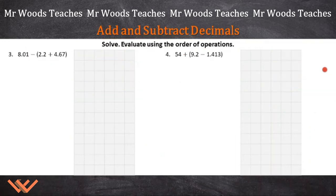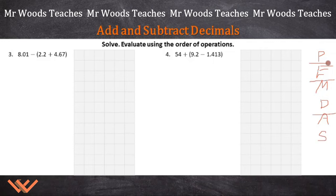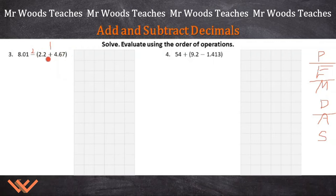Let's continue. Again, we have PEMDAS — Please Excuse My Dear Aunt Sally. I draw lines as a reminder: parentheses, exponents, then multiplication and division, then addition and subtraction at the same level. So we have 8 and 1 hundredths minus, and then we have parentheses — we have to do that first. So the parentheses come first, then we subtract.